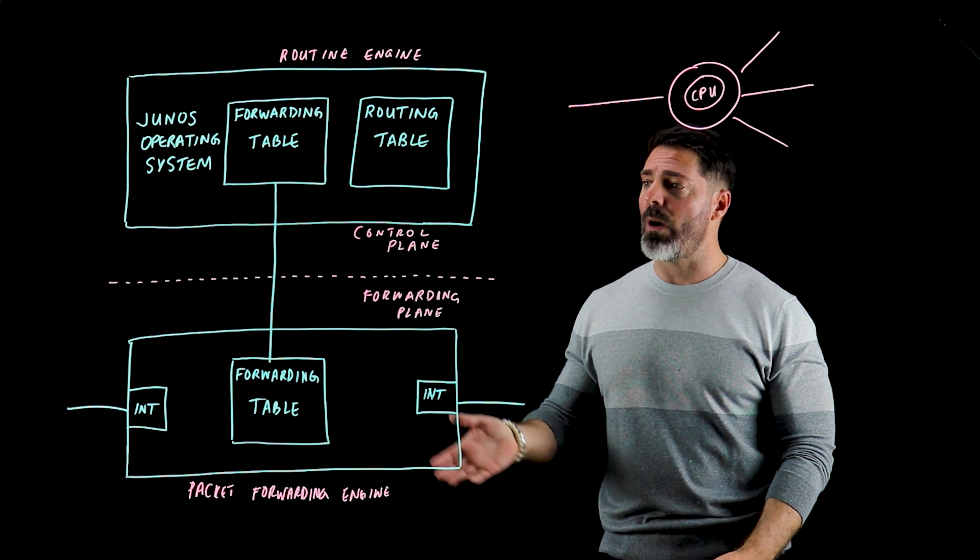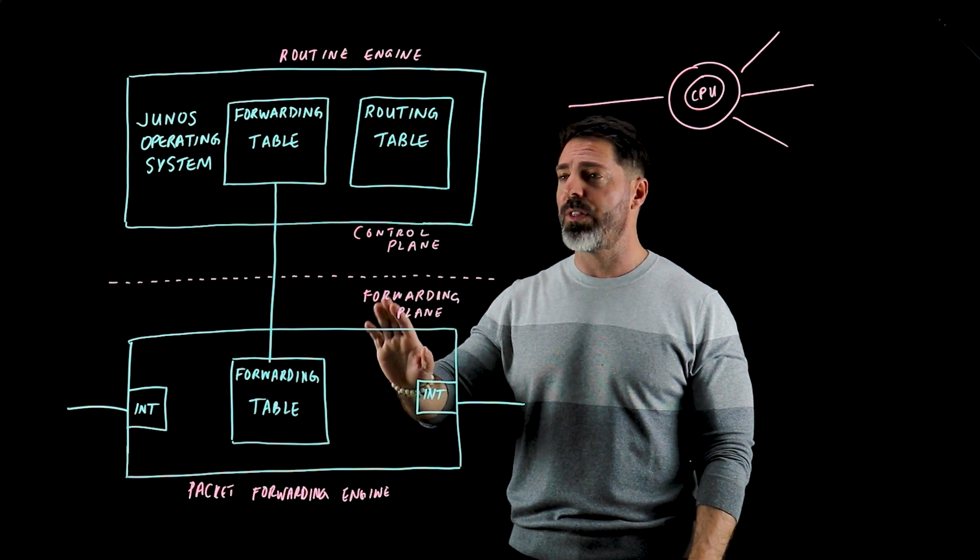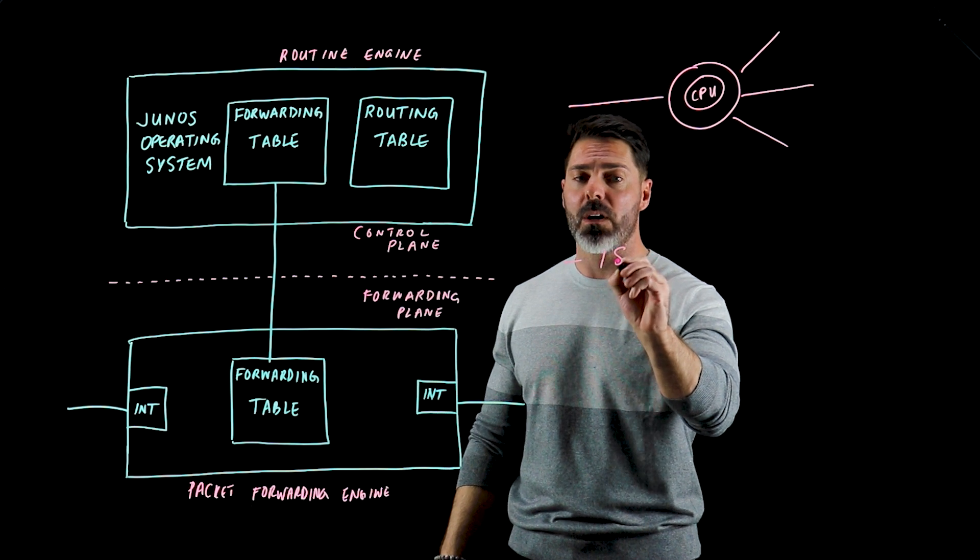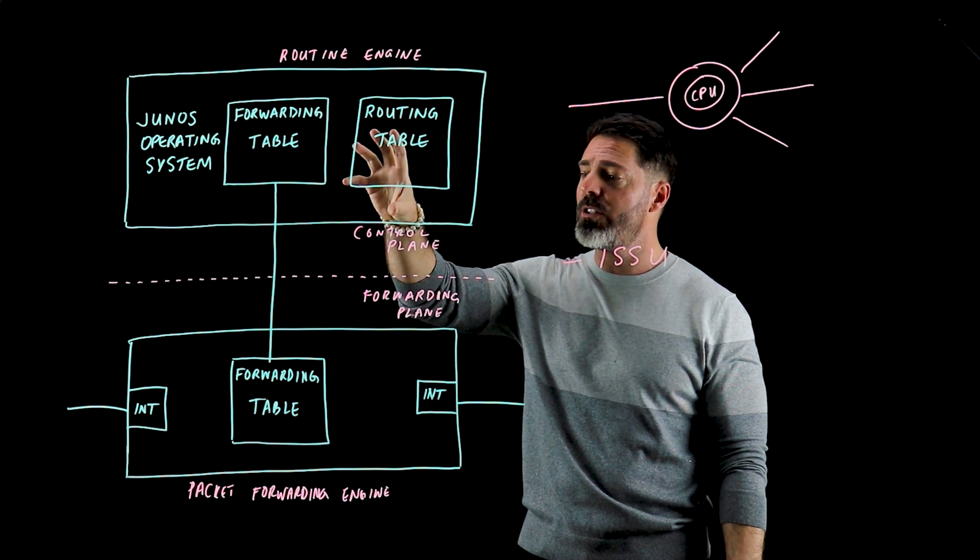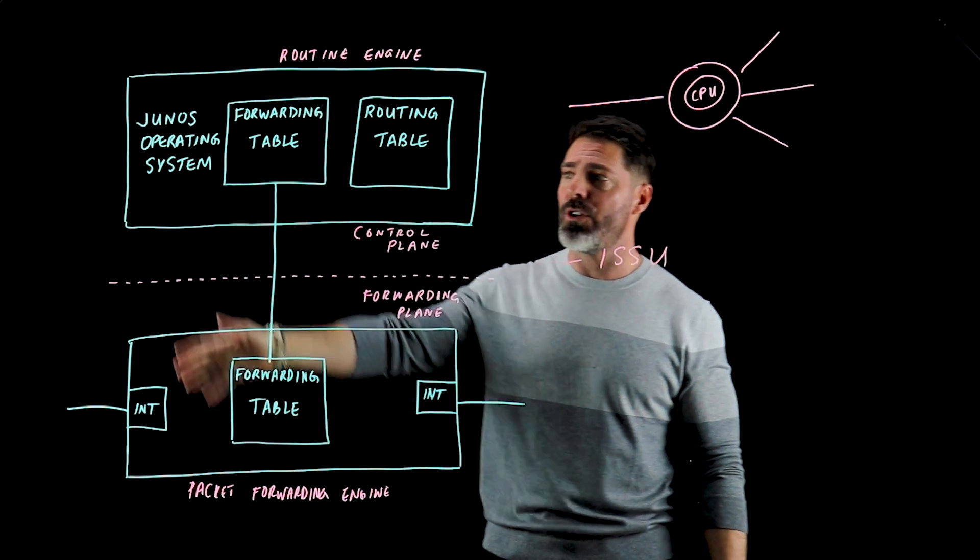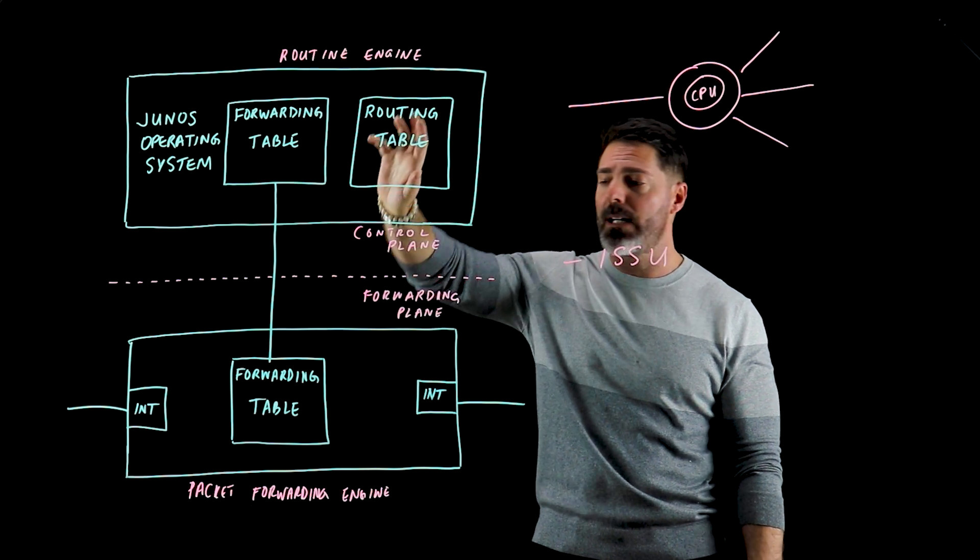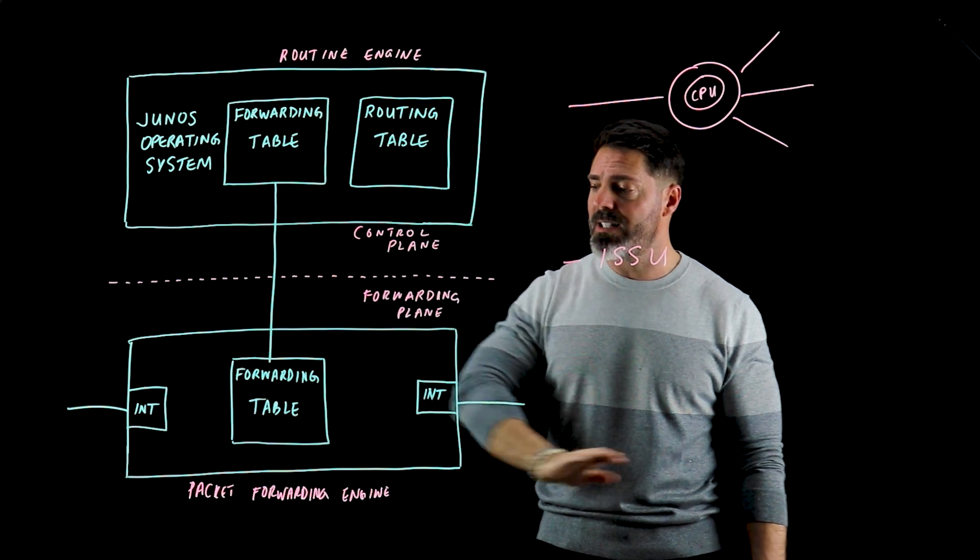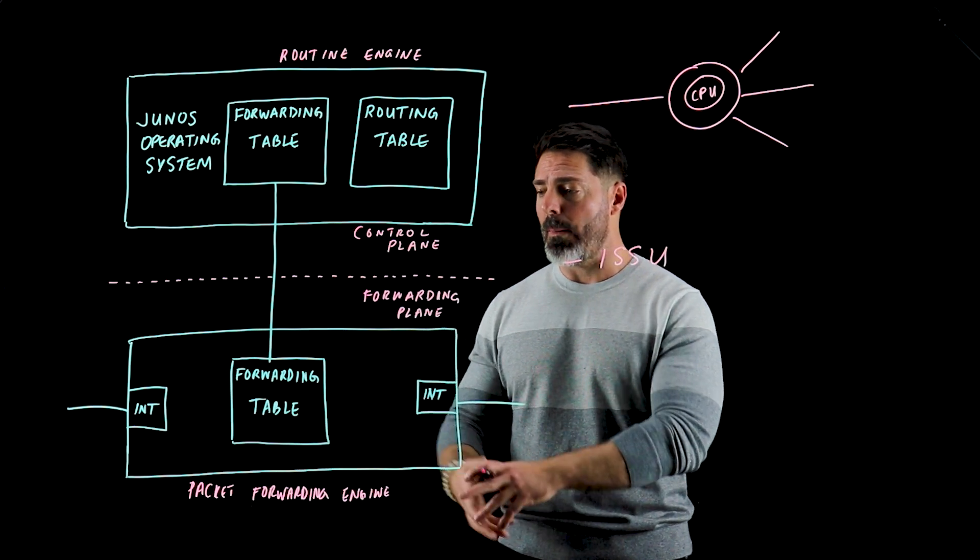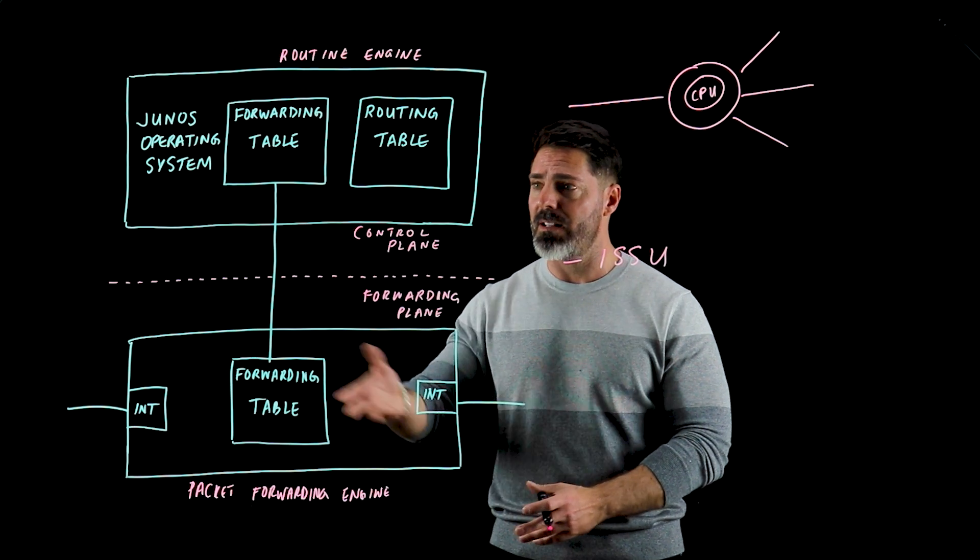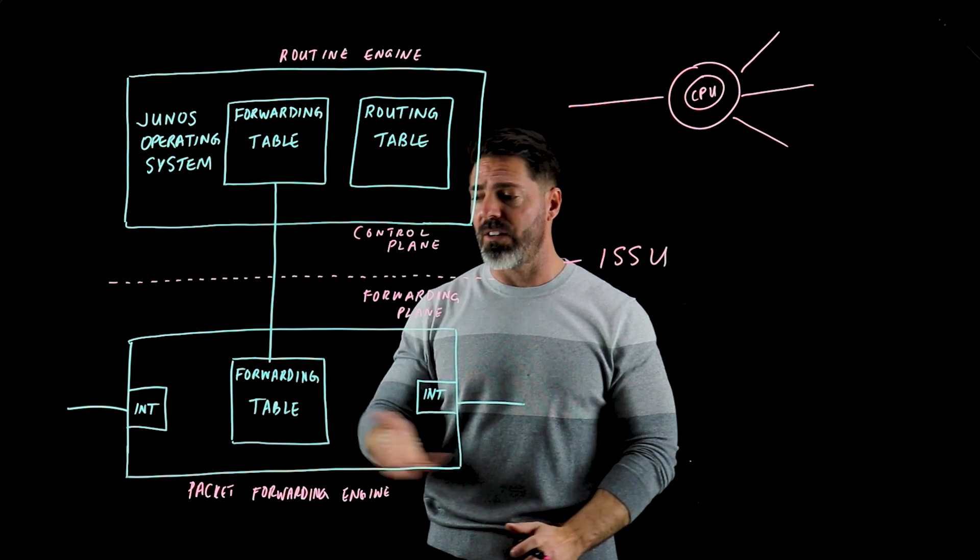Now before I close this video I will say this architecture also lends itself to doing some other really cool things like in-service software upgrades where we can basically upgrade the software on the routing engine while we're still forwarding packets. So you could take this routing engine down during an upgrade, bounce it, bring it back up, but the forwarding engine is still able to forward packets during that time because it's essentially a completely autonomous system. It requires a routing engine for updates but it doesn't require the routing engine to actually forward packets.